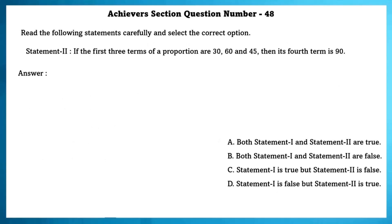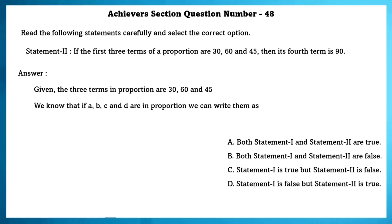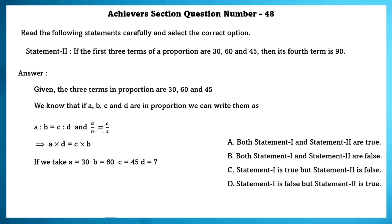Statement 2: The first three terms of a proportion are 30, 60 and 45. Then the fourth term is 90. Using the proportion rule a by b equals c by d, with a equals 30, b equals 60, c equals 45, d equals x, cross-multiplying gives 30 into x equals 45 into 60. Solving gives d equals 90. Statement 2 is true.